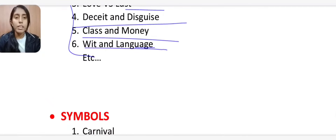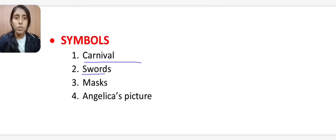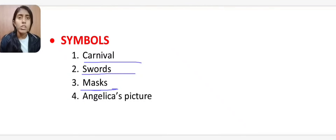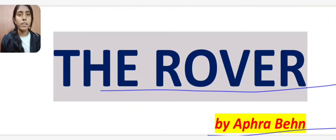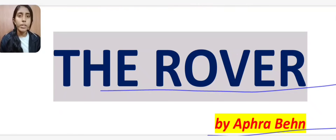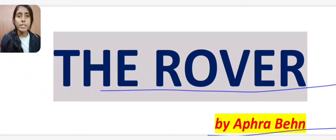The key symbols of the play are: the carnival, representing festivity and freedom; swords, as symbols of conflict; masks, used by characters to hide their identity at the carnival; and Angelica's picture displayed on stage, representing commodification of women. I hope this video was clear and helpful. If you have any doubts, ask in the comments or contact me on Instagram, Facebook or WhatsApp — links in the description. Please like, share, subscribe and we'll see you with a new topic. Thank you.